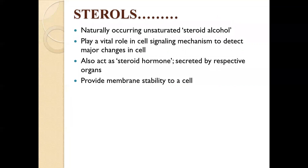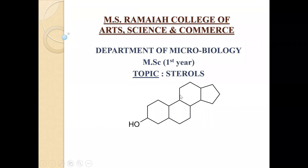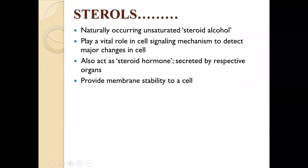For some introduction about sterols, these are naturally occurring unsaturated steroid alcohols. Any steroid has a four-ringed steroid nucleus — the cyclopentano-perhydrophenanthrene nucleus. The sterols contain an alcoholic group, making them steroid alcohols. They play a very important role in cell signaling mechanisms, also act as hormones secreted by respective organs, and provide membrane stability to a cell.